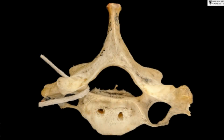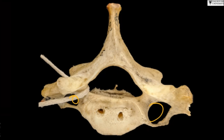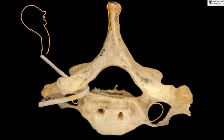This one has a foramen transversarium, so obviously it is a cervical vertebra, but the spine is not a bifid spine — this is the C7 vertebra. Sometimes they call it the vertebra prominens because you can feel its spine on the back of the neck. The other cervical vertebrae have their spinous processes bifid, but this one has a non-bifid spinous process.